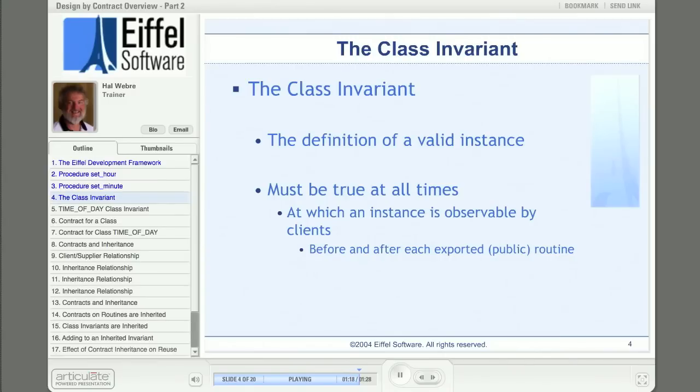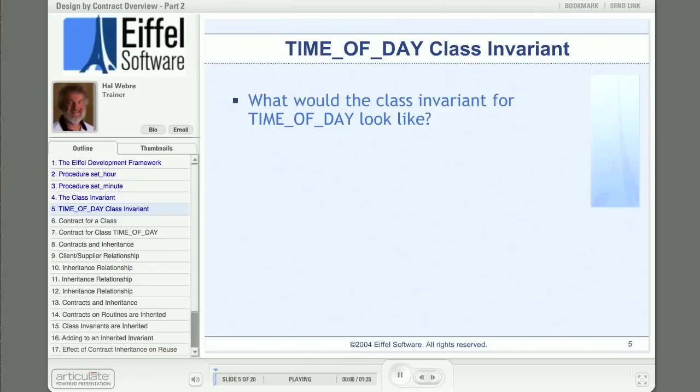As you might suspect, there's only one class invariant per class. And in the Eiffel class syntax, it's coded below all the class's feature clauses. Alright then, what would the class invariant for our TIME_OF_DAY class look like? Well, we know that for any time of day, the values for hour, minute, and second must fall within certain ranges. And if they all do, then we can say that this is a valid time of day. So we express exactly that in the class invariant for the class TIME_OF_DAY.